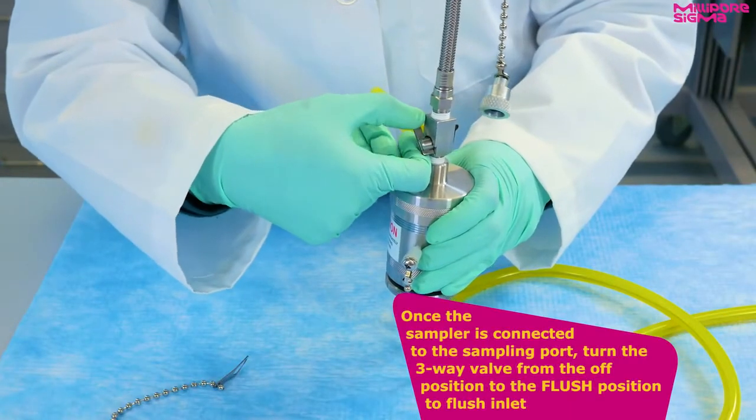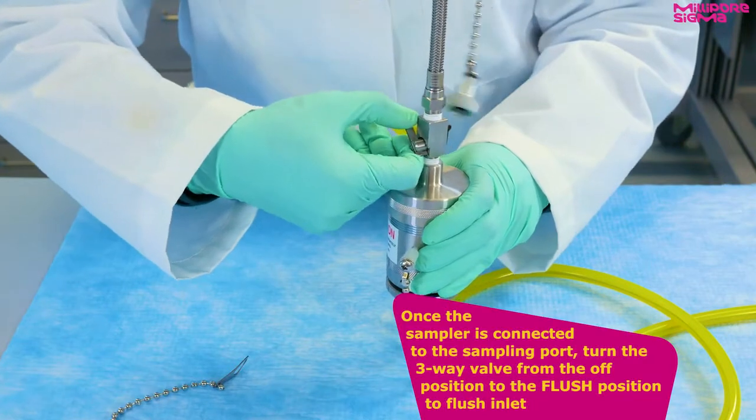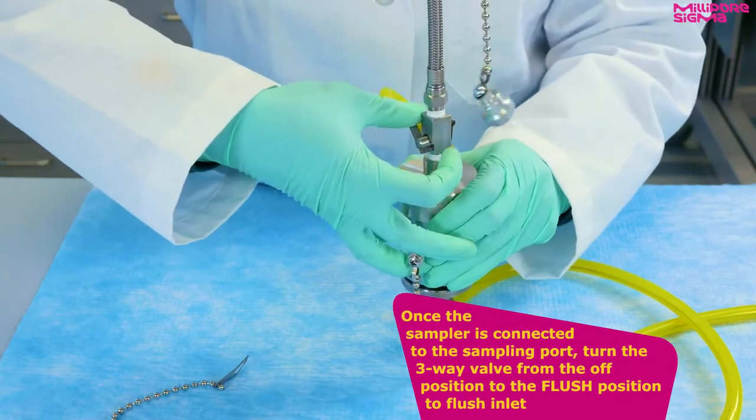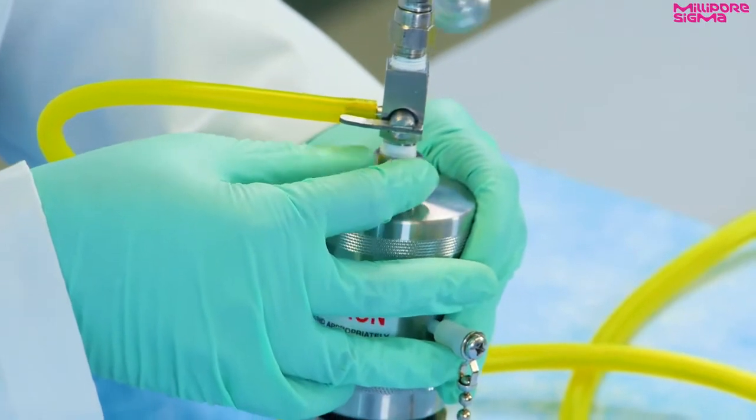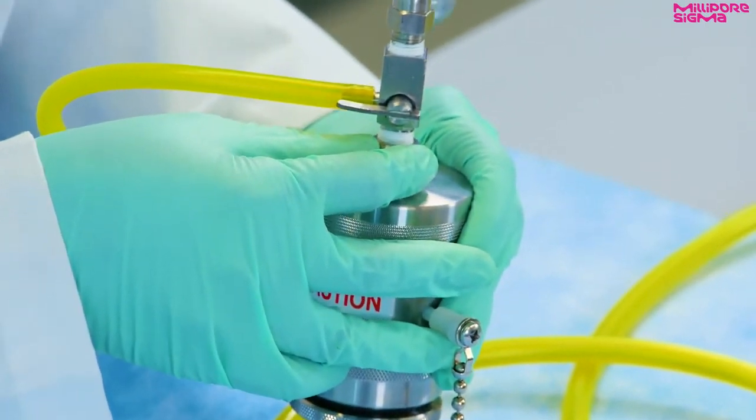Once the sampler is connected to the sampling port, turn the three-way valve from the off position to the flush position to flush the inlet hose. Allow a sufficient quantity of fluid to flow through the bypass tubing to flush contaminants.